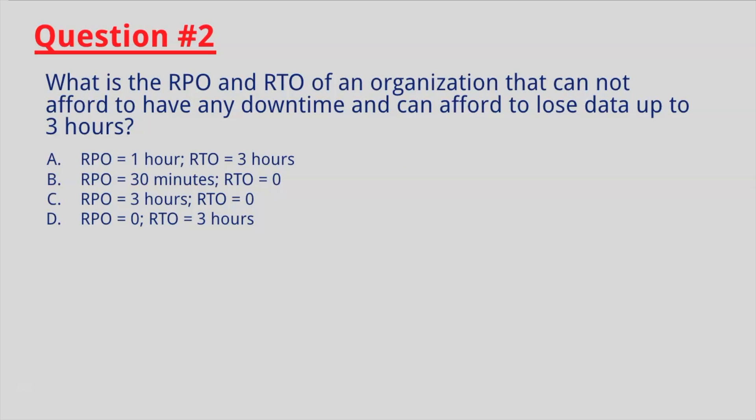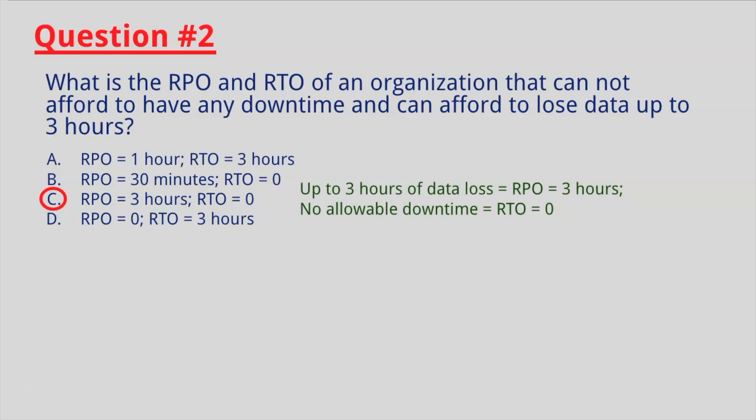Question number two: what is the RPO and RTO of an organization that cannot afford to have any downtime and can afford to lose data up to three hours? Think through these scenarios and remember the definitions of RPO and RTO. If you selected C, you are correct. C is correct because if an organization can afford up to three hours of data loss, then RPO equals three hours. And if an organization cannot afford any downtime, RTO would be zero.